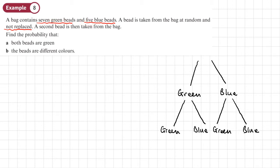So the probability of picking a green at the start is going to be seven over 12. And a probability of picking a blue at the start is going to be five over 12.